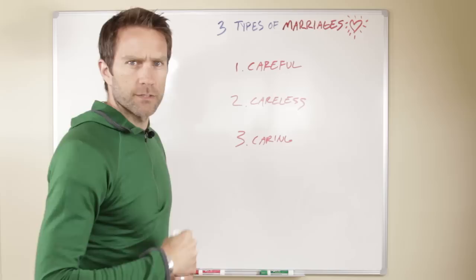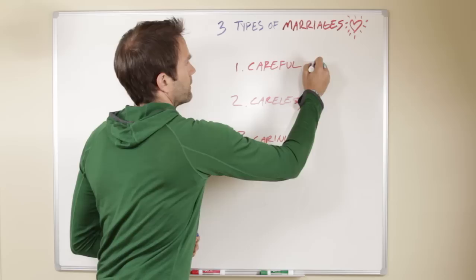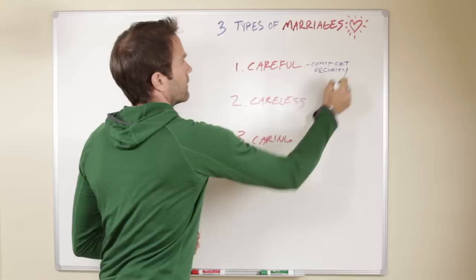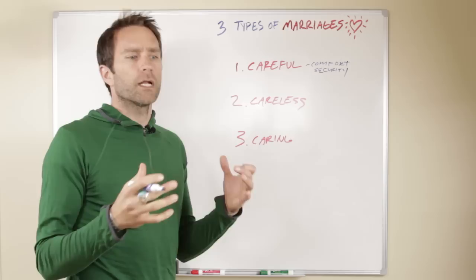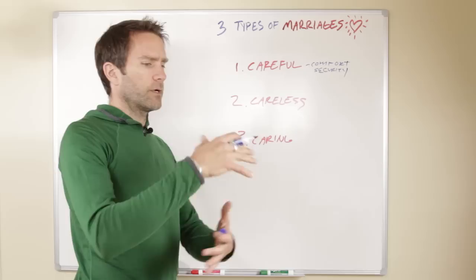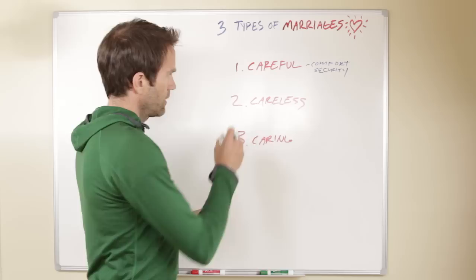The careful types make the point of the marriage really about comfort and security. They really focus on being safe. They found the one they can kind of park their car here and they don't really have to do anything anymore. Their orientation within the marriage is let's get back to comfortable and let's get back to being safe.